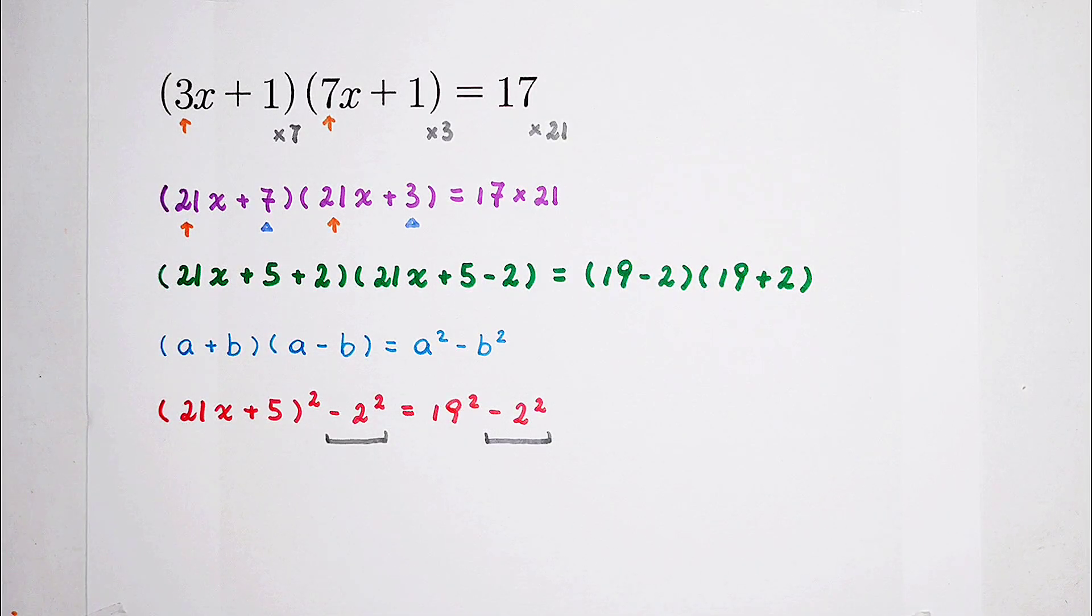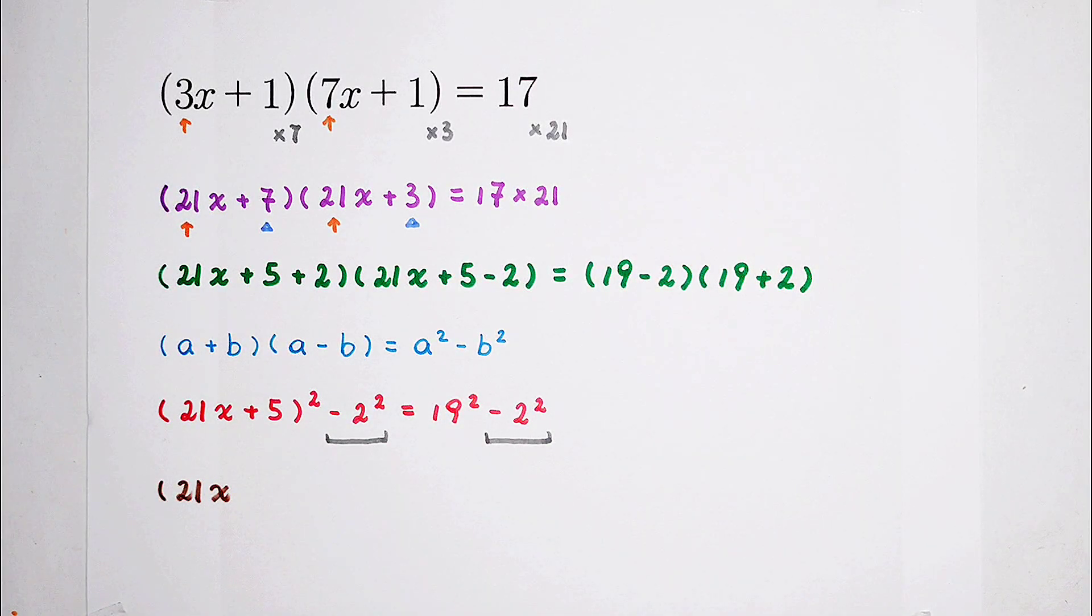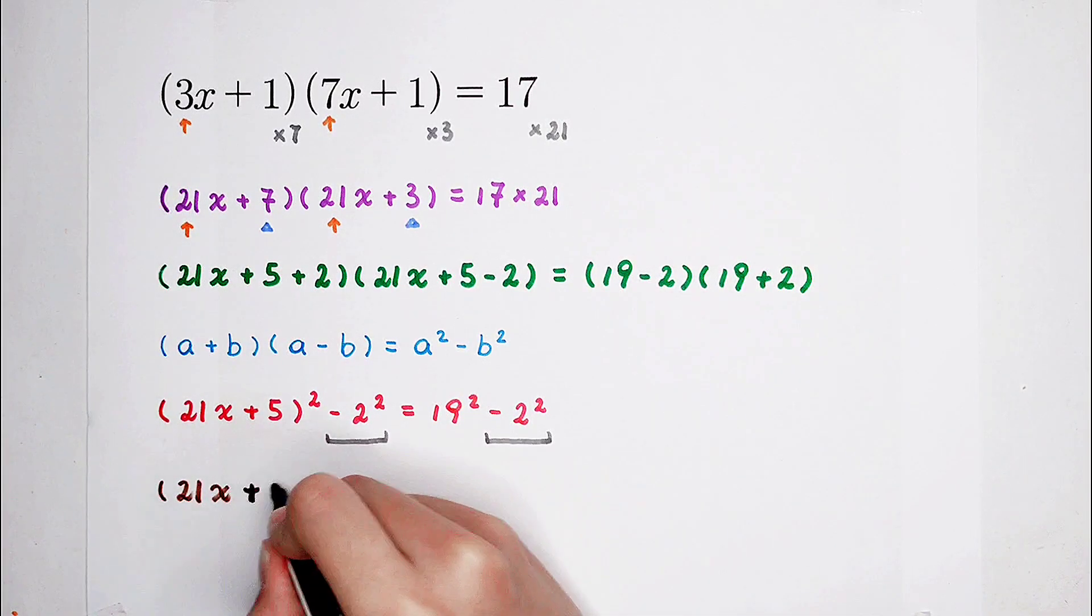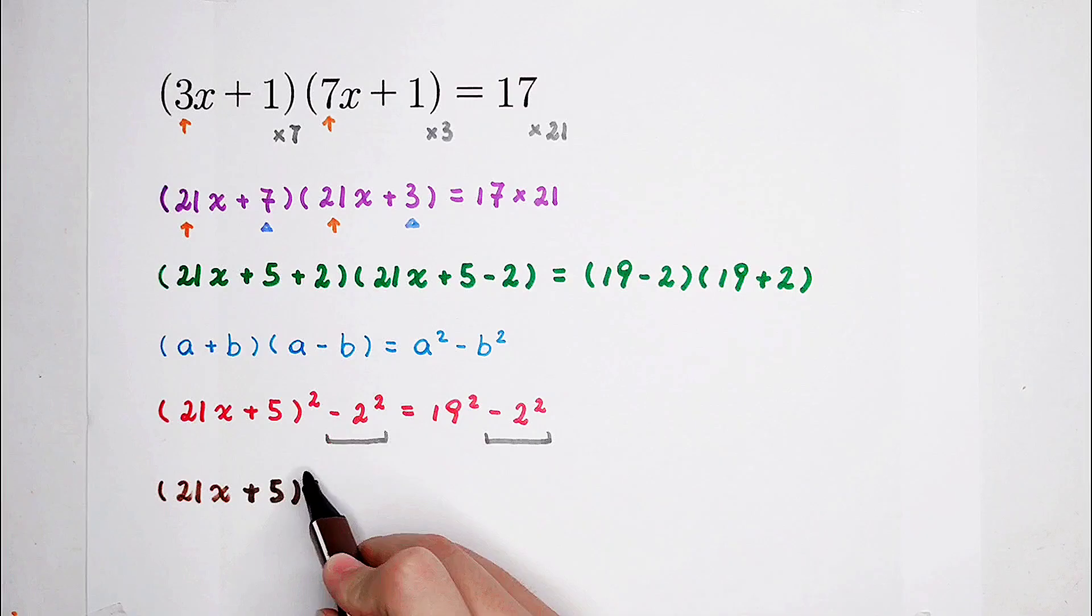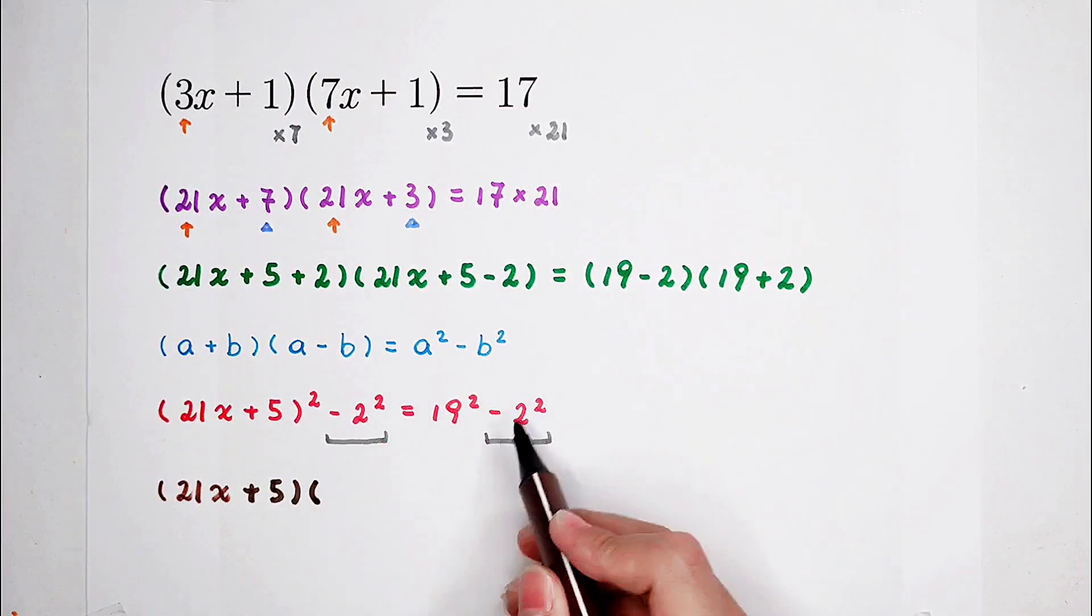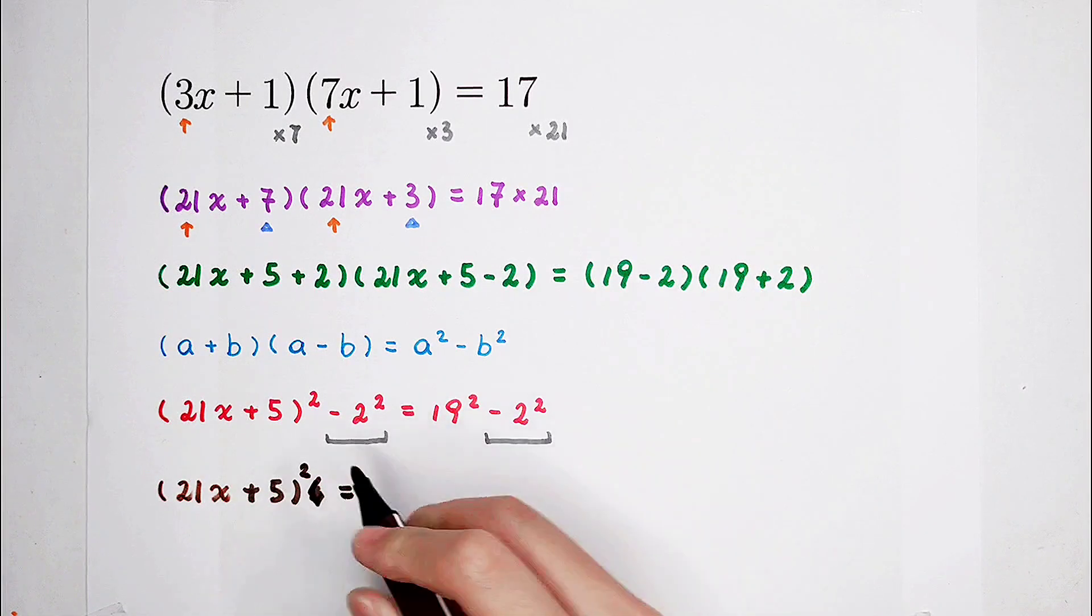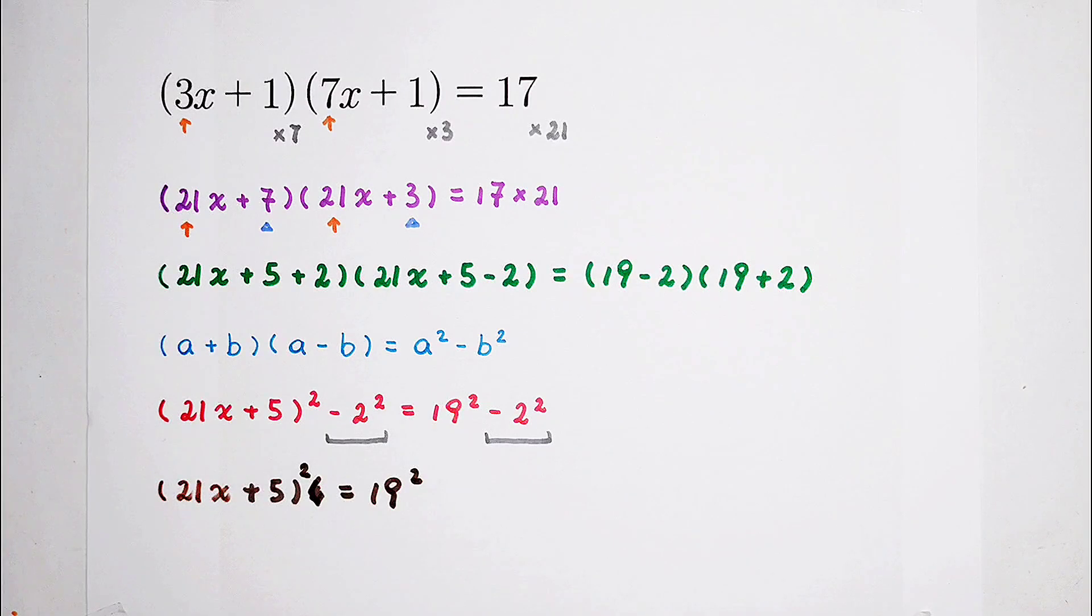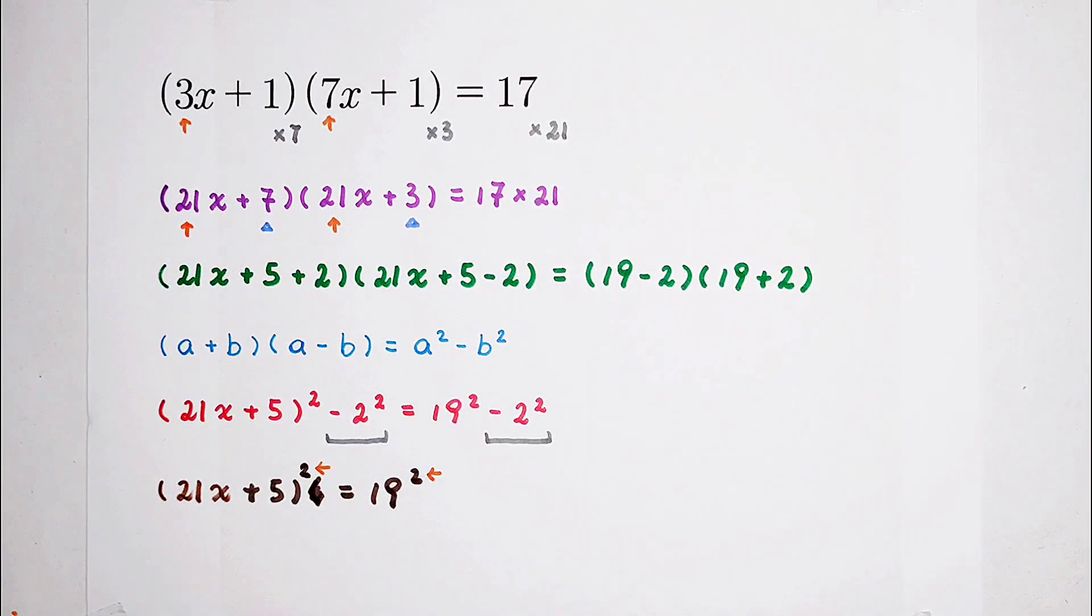It's so surprising. Since minus 4 and minus 2 squared are canceled, the left-hand side is only 21x plus 5 all squared, and the right-hand side is 19 squared. And you can find out that squared squared. So it's a nice equation, isn't it?